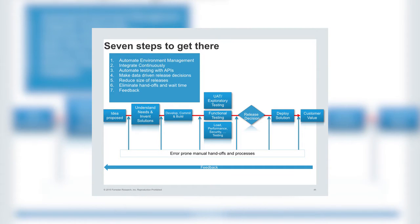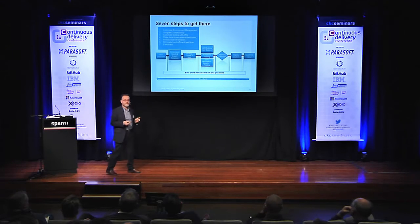You can't have development teams waiting three weeks for a server, or two weeks, or even a day — and then having to install the software and configure it. This should be available to them instantly, and it can be done. Cloud is here. There are various converging technologies available to us: cloud, big data, microservices, and so forth. So the first thing is you really need to automate environment management.